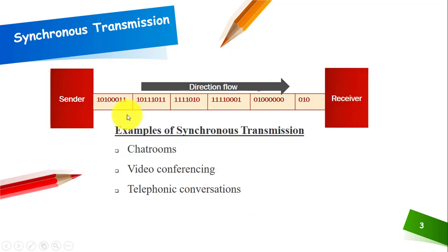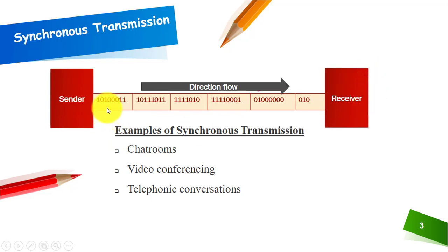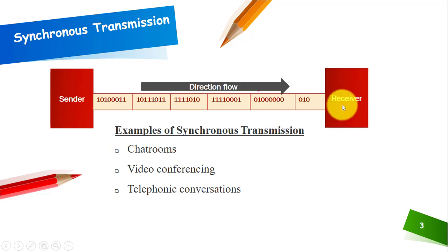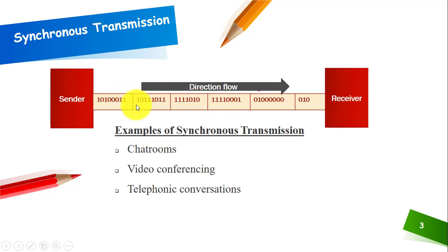This is a representation of synchronous transmission. You can see here this is a sending device and this is a receiving device. The information 1010011 is organized as block 1, block 2, block 3, block 4, block 5, and so on. The direction of data flow is from the sending to the receiving side. You can see that there are no spaces between these blocks.